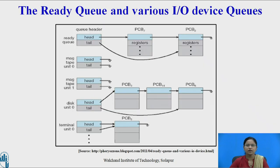Along with the ready queue, a number of device queues are present in the system. As shown here, we have a magnetic tape device queue for two units, a disk queue for one unit, and a terminal device queue for one unit. Processes can wait for a disk. The ready queue contains two processes — P7 and P2 — while processes P3, P14, and P6 are waiting for the device disk.